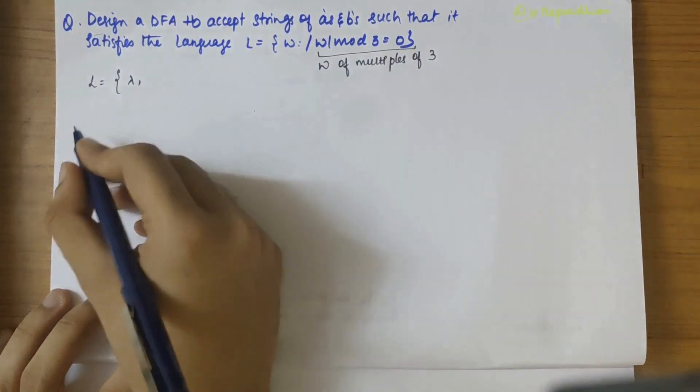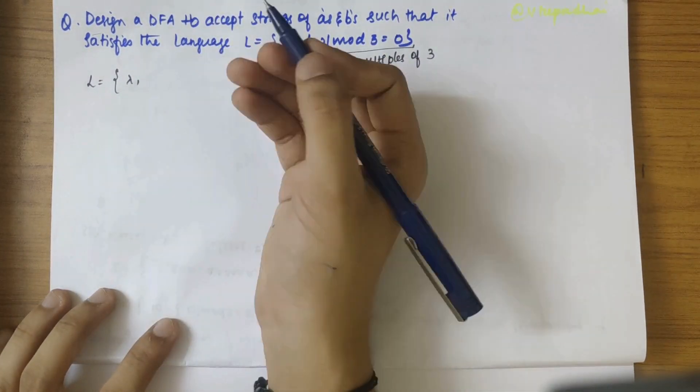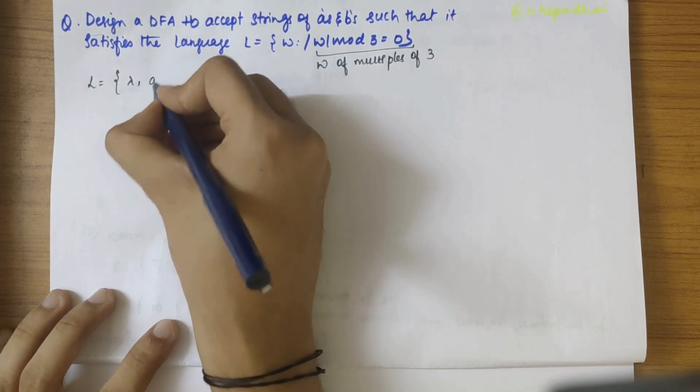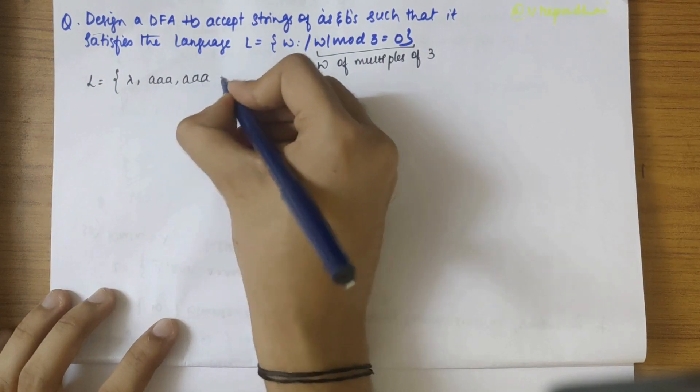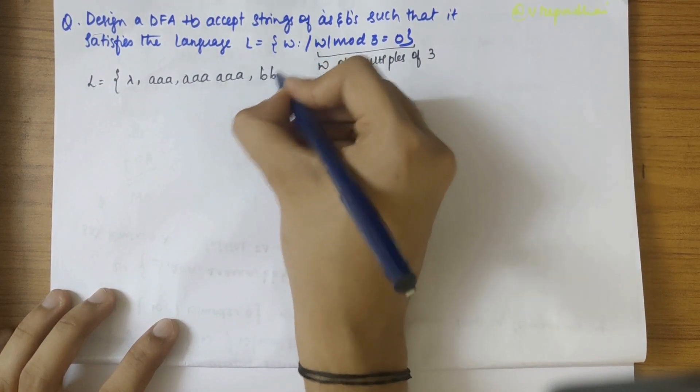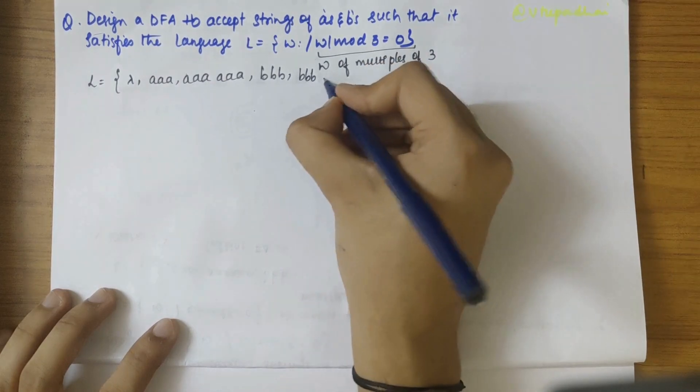So if there's nothing, nothing mod 3 is 0 itself, right? 0 mod 3 is 0 itself. Fine. So it could be AAA, that is 3, or 6, and so on.